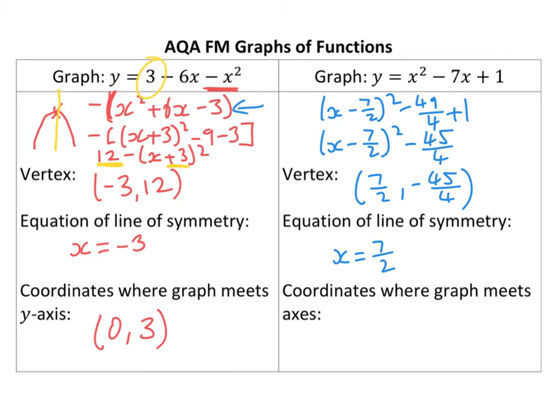Now, the coordinates where the graph meets the axis, we've got, let me change colour quickly, this is one of them, isn't it? Okay, so we've got 0, 1. That's the y-intercept. We've just got to find the x-intercept. Now, we do that by solving this, essentially.